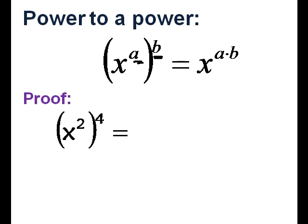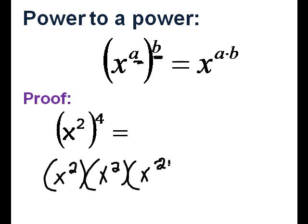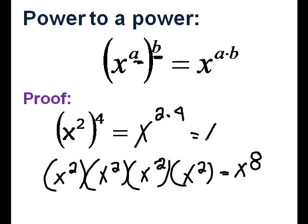So let me show you how that one works. Let's say I have x squared to the fourth power. That means I have x squared four times. So there's 1, 2, 3, and 4. Now let's count how many exponents we have, 2, 4, 6, 8. So that would be x to the eighth. Well, that's the same thing as saying x to the 2 times 4, which is x to the eighth.